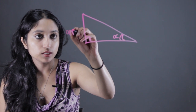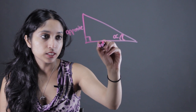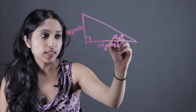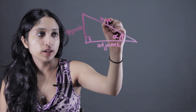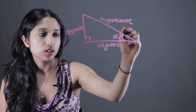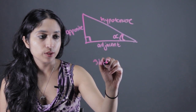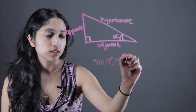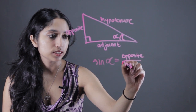This side is going to be opposite, because this is the side opposite of alpha. This is going to be adjacent, because this is the side closest to alpha. This diagonal line right here is going to be called our hypotenuse. We can define the sine of alpha as opposite over the hypotenuse.